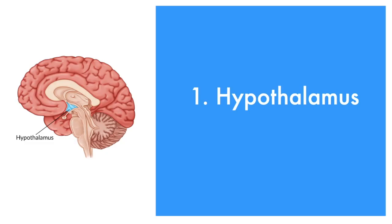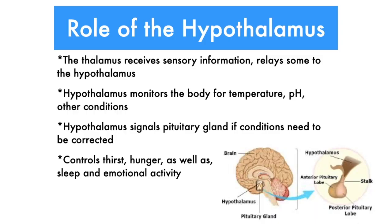The first gland we're going to talk about is the hypothalamus. The thalamus receives sensory information and sends it to the hypothalamus. The hypothalamus monitors body temperature and pH — how acidic or basic the body fluids are. It signals the pituitary gland when certain conditions need to be corrected. The main things it controls are thirst, hunger, sleep, and emotional activity.